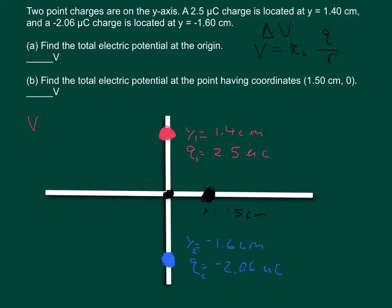So the electric potential of charge 1 is equal to 8.99 times 10 to the 9th times the charge. Now we're in microcoulombs so we got to change that to Coulombs, so it's 2.5 times 10 to the negative 6, divided by the radius. Now we're in centimeters so remember to put that in meters, so 0.014 meters.